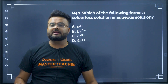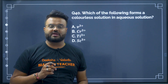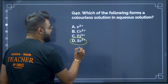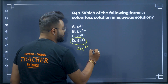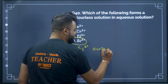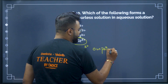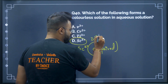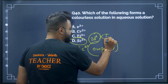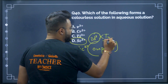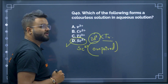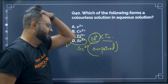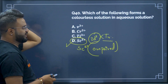Question number 40: which of the following forms a colourless aqueous solution? Among these, only cadmium has 0 unpaired electrons. If there are 0 unpaired electrons (3d10 configuration), it never undergoes d-d transition to give colour. Therefore option D will be your correct answer.